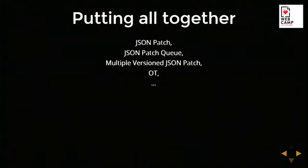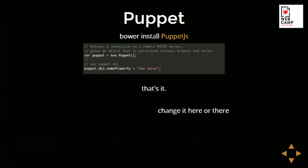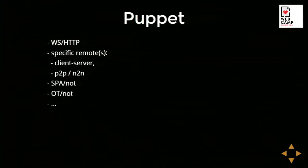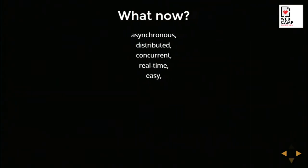Putting it all together: we have JSON, JSON patch, JSON patch queue, multiple version JSON patch, and JSON patch OT — quite a lot. But there's a solution: Puppet.js, a library that covers the entire flow. You just connect it to a remote — it can use localhost for synchronous local changes, or WebSockets, HTTP, and single-page applications. You can specify remotes and disable OT if you want. And if you're a fan of web components, there's a custom element for that — you put HTML elements into your code and it binds a JS object into your DOM API, quite declaratively.